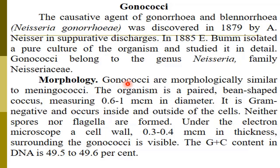Regarding the morphology, gonococci are morphologically similar to meningococci. They appear as single diplococci or tetrads, kidney-like in shape, measuring 0.6 to 1 micrometer in diameter. They are gram-negative and occur inside and outside of cells. Neither spores nor flagella are formed. Under the electron microscope, a cell wall 0.3 to 0.4 micrometers in thickness surrounding the gonococci is visible. The DNA G+C content is 49.5 to 49.6%.